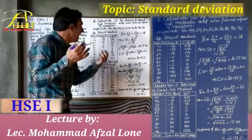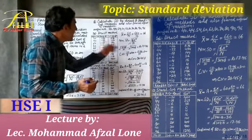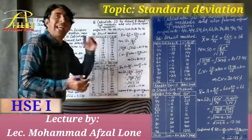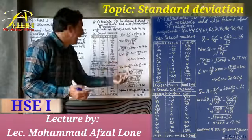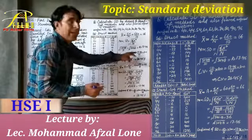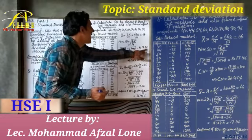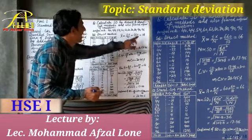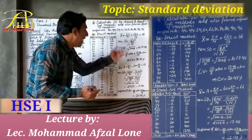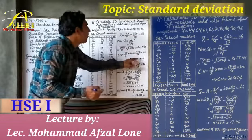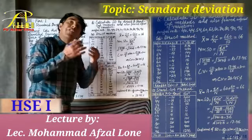The coefficient of variation: CV = (SD divided by x̄) into 100. Instead of SD we have 17.46, divided by x̄ which is 66, multiplied by 100. That equals 26.45. This is how standard deviation and coefficient of variation are calculated by the direct method.